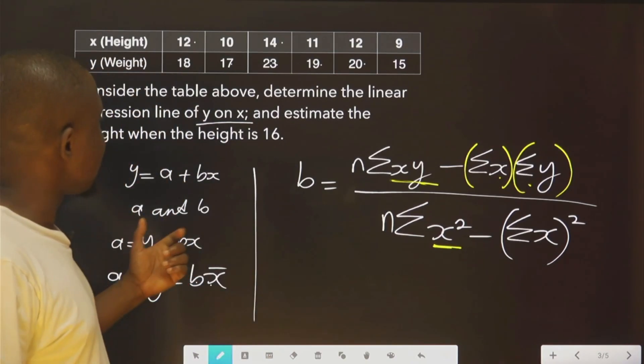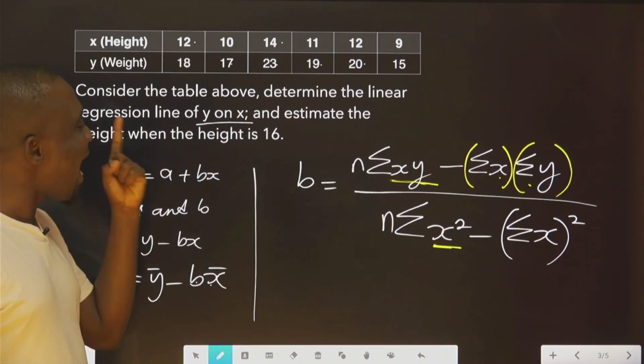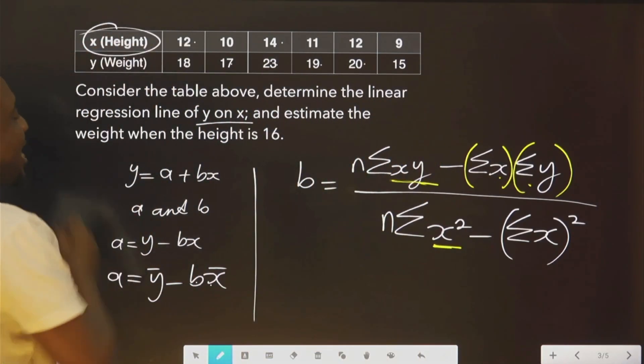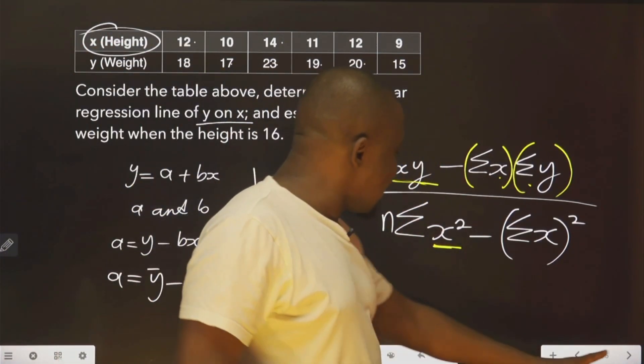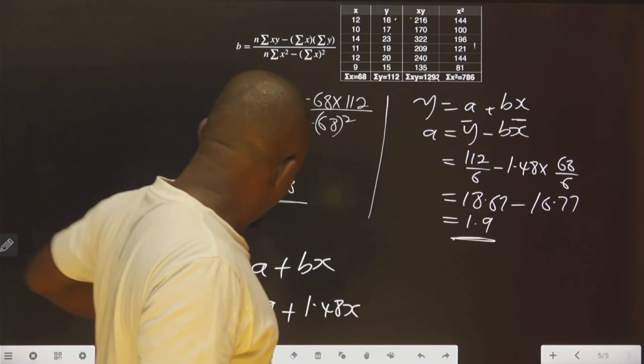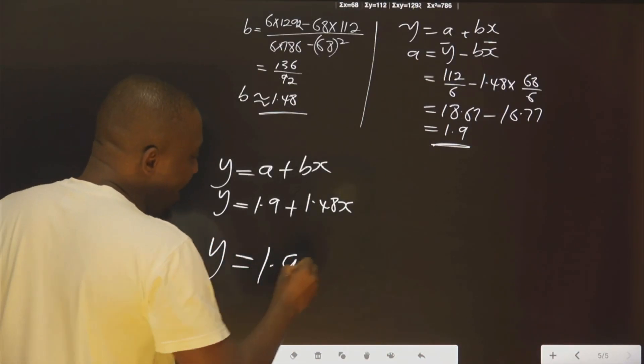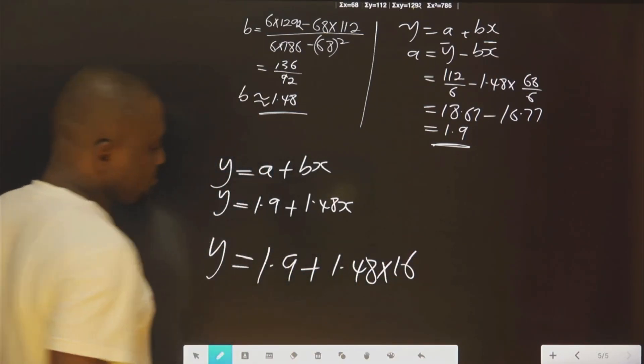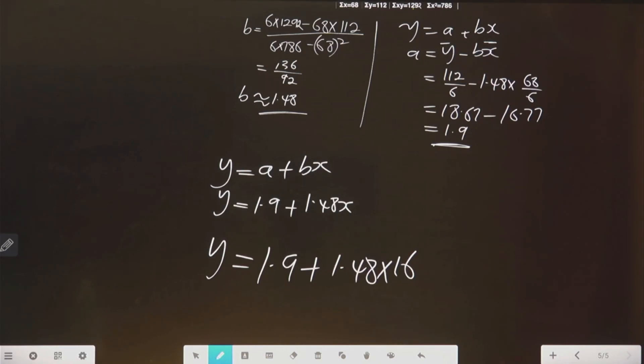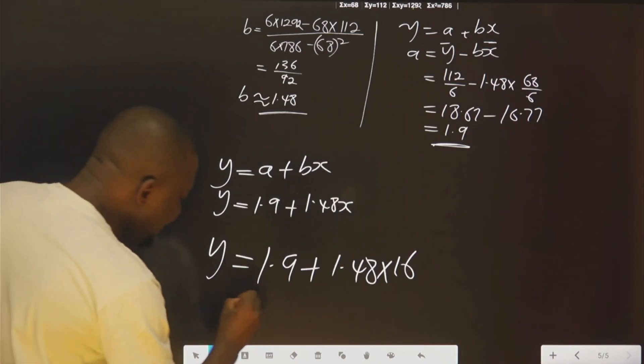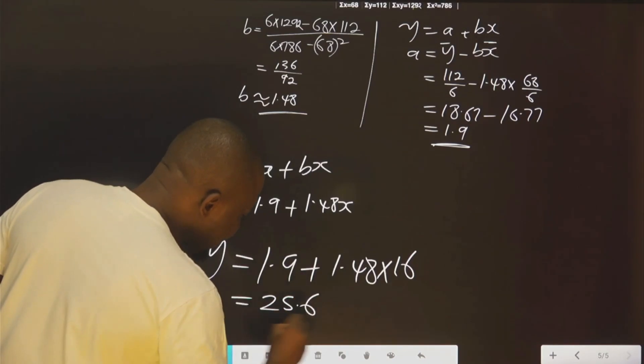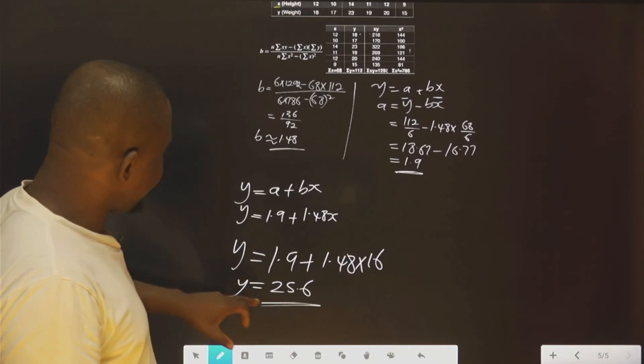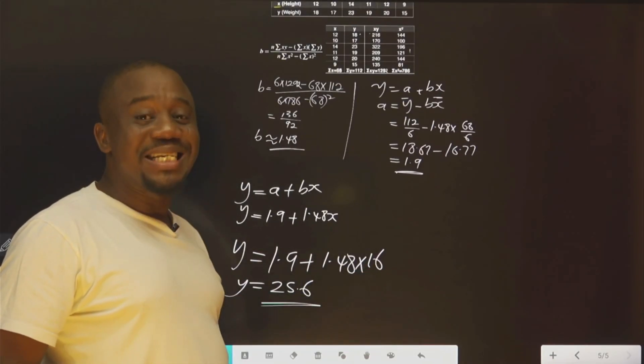The question also asks us, estimate the weight when the height is 16. It means that the height, as you can see here, is x. We are going to put 16 in place of x. So here we say y, 1.9 plus 1.48 multiplied by 16. Let me get the calculator. This is 25.6. This is the value of y when x is 16.